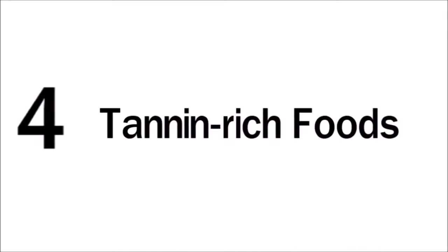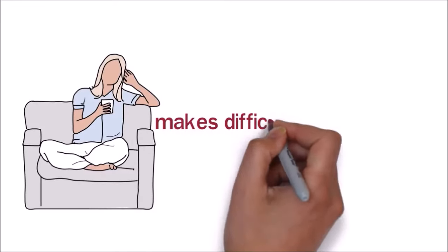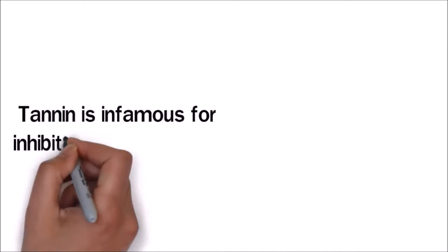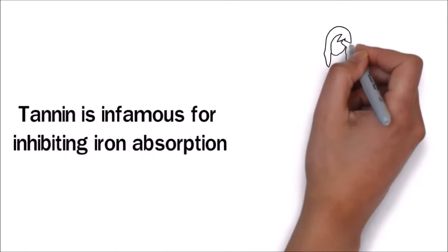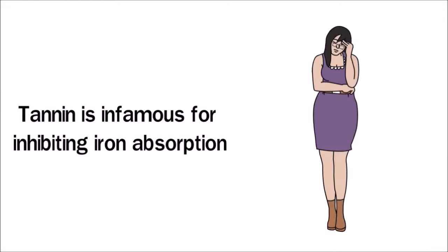Tannin-rich foods. Being a tea or coffee addict while you are anemic can make it difficult for you to cure your condition. Tannin is infamous for inhibiting iron absorption, which means you will continue to be iron deficient if you consume foods rich in tannin.